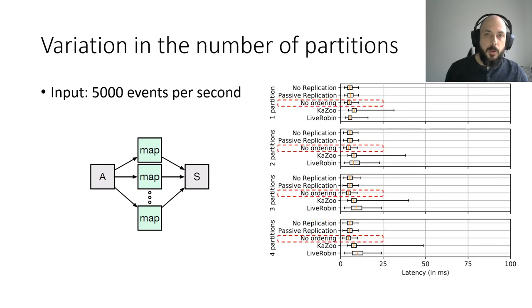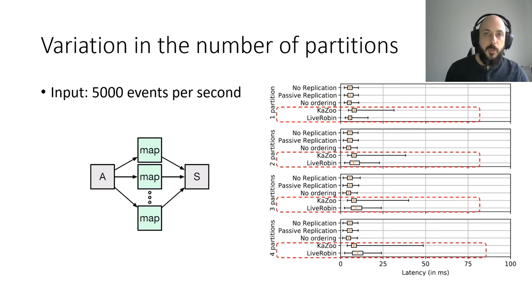No-ordering, as expected, gives better results than passive replication, but with less difference than for the different number of consecutive tasks. As before, LiveRobin has a more stable performance than Kazoo, and a bit higher overhead latency with a higher number of partitions, though in smaller proportion compared to the previous experimentations.